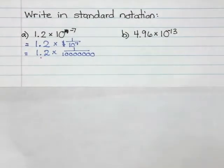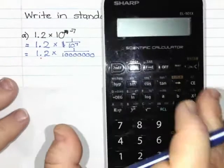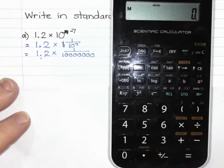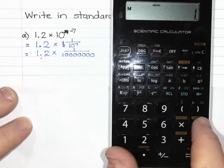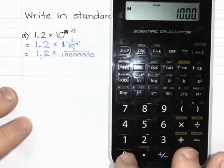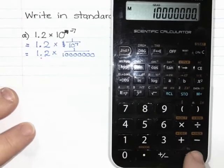And if you're not sure, you can use your calculator to help you do that. And then I am just going to calculate, so 1.2 times, and then 1 divided by, and then a 1 with 1, 2, 3, 4, 5, 6, 7 zeros.